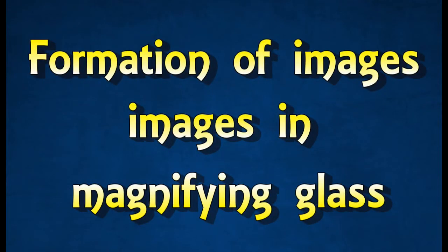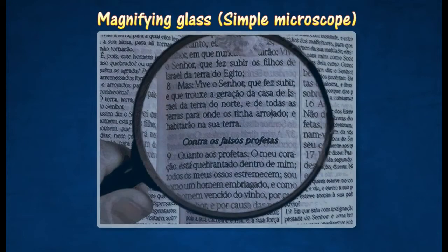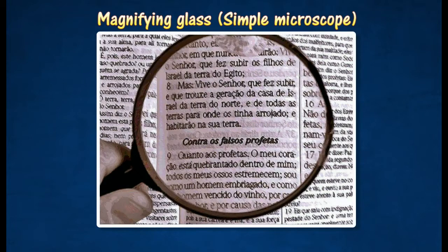Formation of Images in Magnifying Glass. A magnifying glass is the simplest magnifying instrument, which can be used to produce enlarged images of small objects.